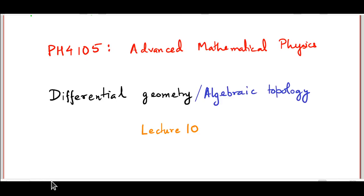This is the 10th lecture of my series on Advanced Mathematical Physics. We have been discussing differential geometry of manifolds, and in particular, over the last few lectures, we have been talking about vectors. Today we are going to talk about an operation that can be done on tangent vectors. This operation is often called push forward, but its more formal name is Jacobian.